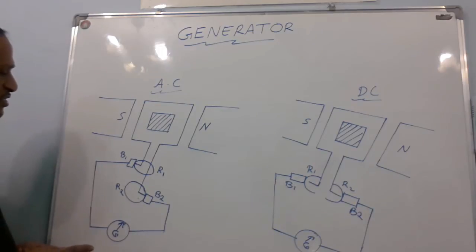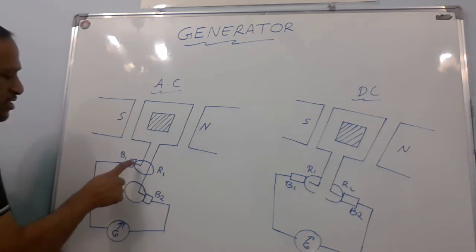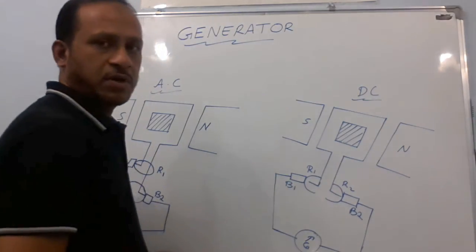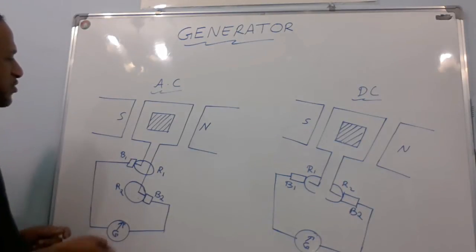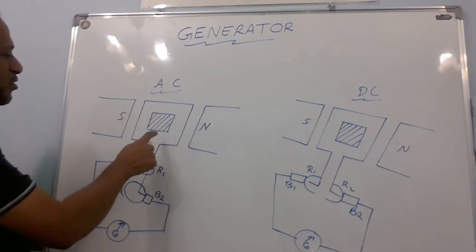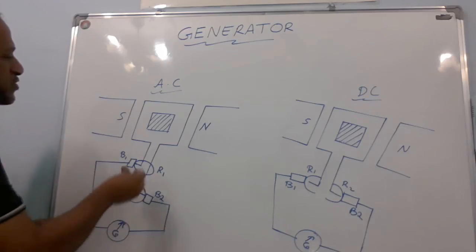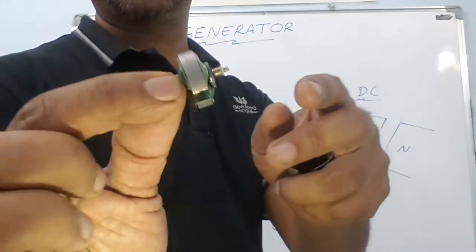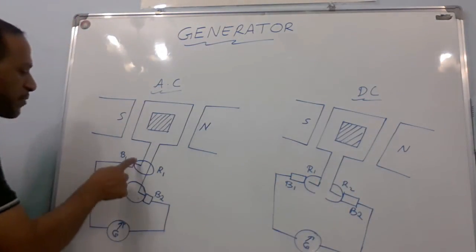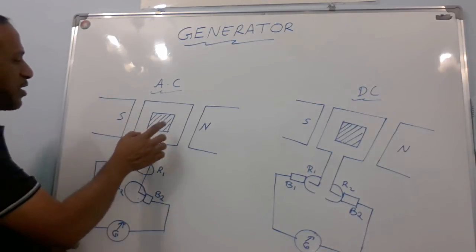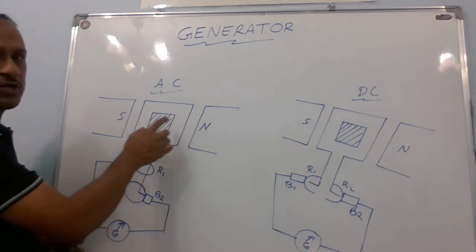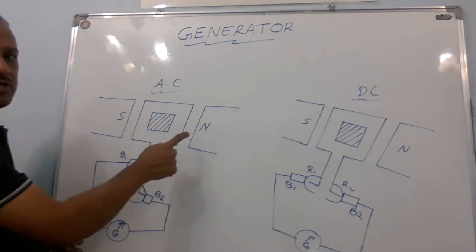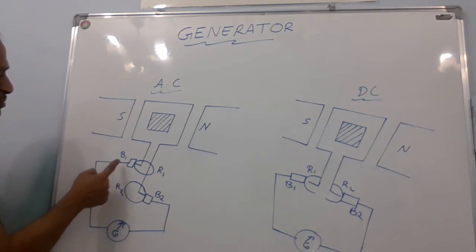The basic difference between an AC generator and a DC generator is only at this point. For the AC generator, there is a full ring — these are slip rings R1 and R2. In the case of a DC generator, it is a split ring, and the other features are almost the same. The generator consists of an armature coil with a soft iron core, on which insulated copper wire is wound. The two ends of the copper wire are connected to two slip rings in an AC generator. The armature coil is kept between the south and north poles of a magnet. When the coil rotates between the poles, it induces a current in the coil, and that current can be taken out through brushes B1 and B2, which are always in contact with rings R1 and R2.